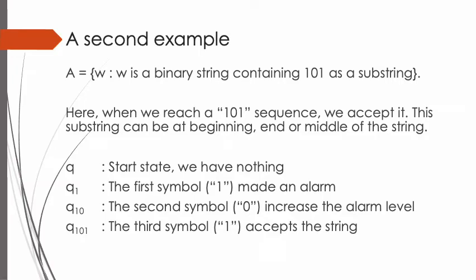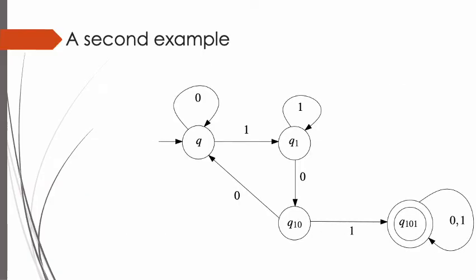Q1,0 means the second symbol — letter 0 — came and increases the alarm level. Q1,0,1 means the third symbol — letter 1 — came, and the automaton must accept the string. Now it's time to plan the initial state. The first question is: what state should the initial state be? Could it be one of the situations that belong to the solution we have in mind, or should we add a new state? Next, we ask: have we planned an outgoing edge labeled with each letter in the alphabet for each state? Where should it go if symbol 0 appears? If symbol 1 comes up, where should it go? Finally, in what states do we meet the conditions required by the problem? We will make those states the accept states, indicated with a double-lined circle.